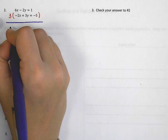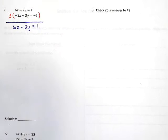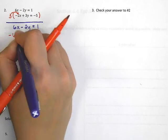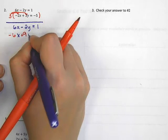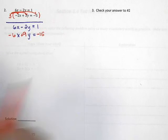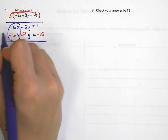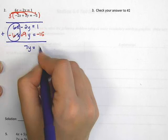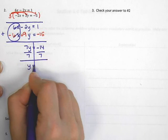The first equation doesn't change: 6x minus 2y equals 1. Then I distribute: 3 times negative 2x gives negative 6x, 3 times 3 is positive 9y, and 3 times negative 5 is negative 15. The x's cancel. So negative 2y plus 9y equals 7y, and 1 plus negative 15 equals negative 14. Dividing both sides by 7 gives y equals negative 2.